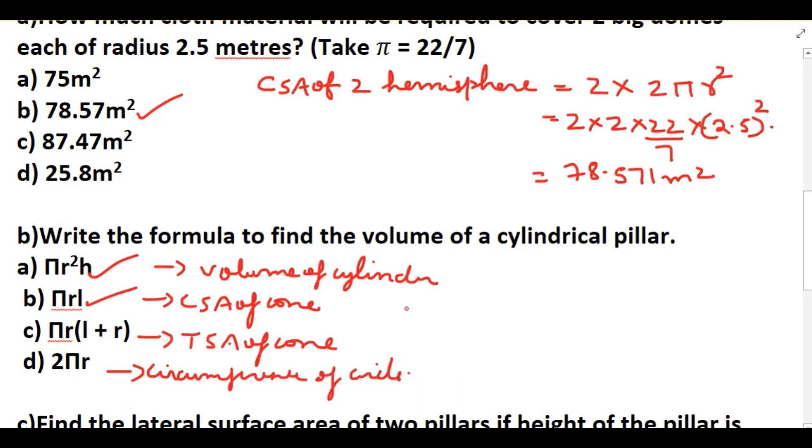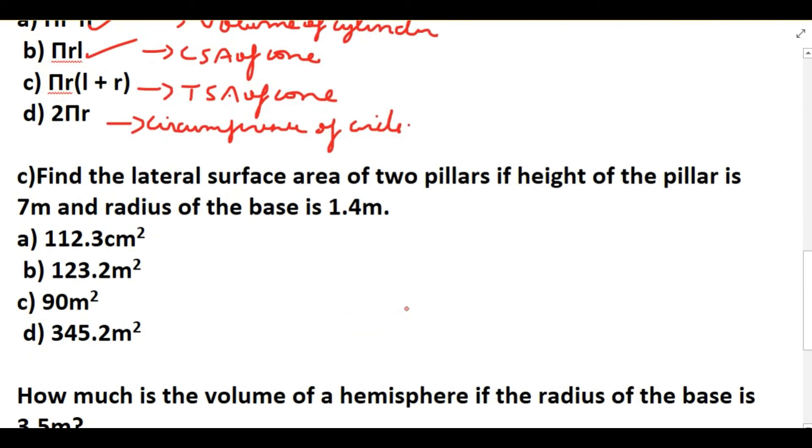In next question: Find the lateral surface area of two pillars if the height of the pillar is 7 meters and radius of the base is 1.4 meters. Pillars are in the shape of cylinder, so CSA of cylinder we have to find. CSA of cylinder is 2πrh, but the question is we need to find two pillars. This is CSA of one cylinder, so CSA of two pillars means we need to find out, we have to multiply with 2.